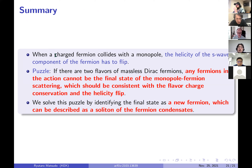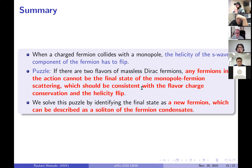Now let's summarize my talk. When a charged particle collides with a monopole, the helicity has to flip. The puzzle is that if there are two or more flavors of massless Dirac fermions, any fermion in the spectrum cannot be the final state of the monopole fermion scattering, because there is no candidate consistent with flavor charge conservation and helicity flip. We solve this puzzle by identifying the final state as a new fermion that can be described as a soliton of fermion condensation. Thank you very much for your attention.